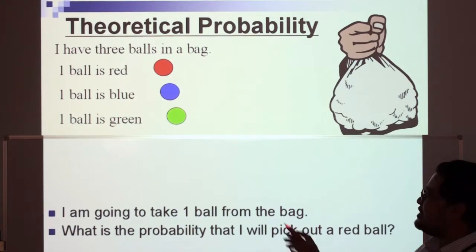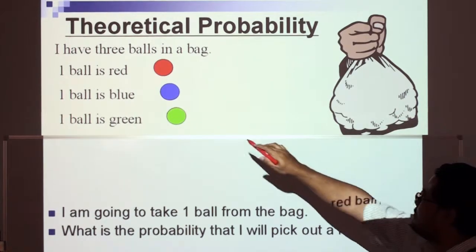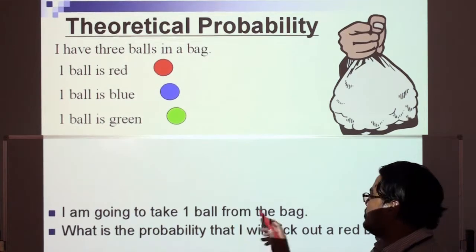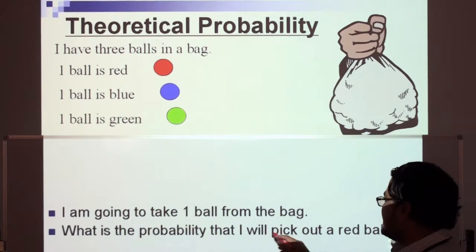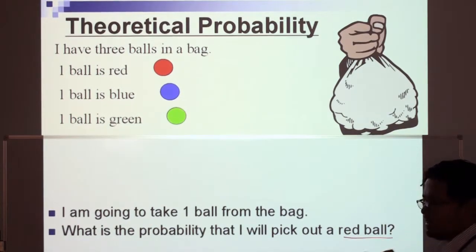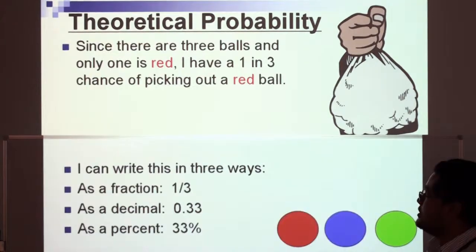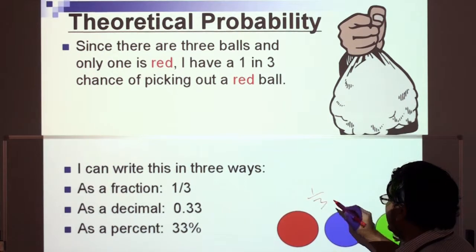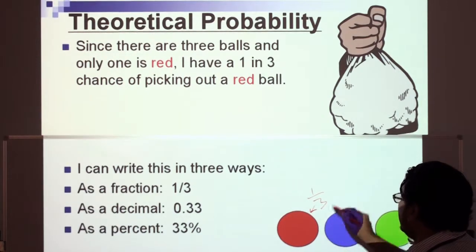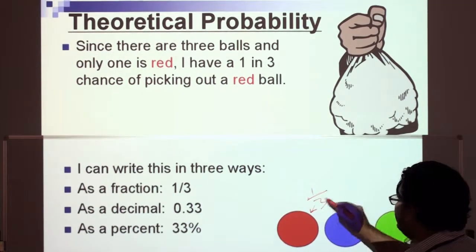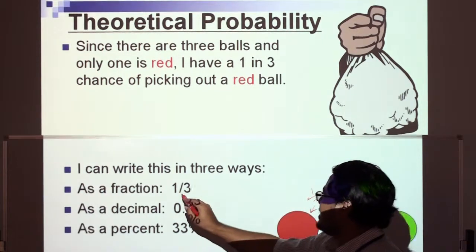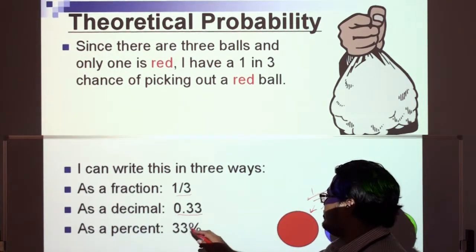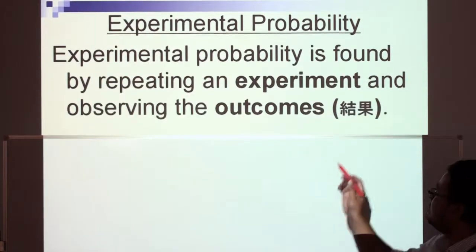Imagine that I have three balls in a bag — one ball is red, one ball is blue, and one ball is green. I am going to take one ball from the bag. What is the probability that I will pick out a red ball? Since there are three balls and only one is red, I have a one in three chance. I can write this in three ways: fraction — one over three; decimal — 0.33; and percent — 33%.